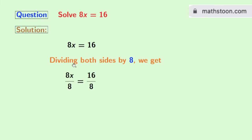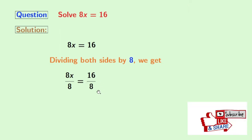Doing so, we get 8x divided by 8 equals 16 divided by 8.